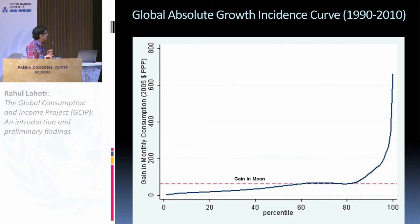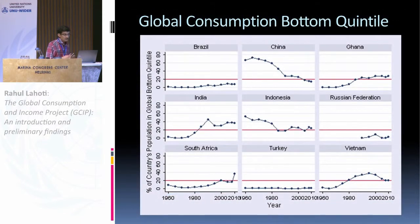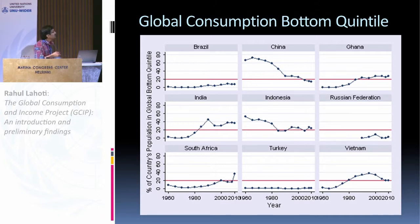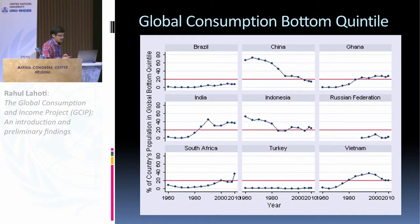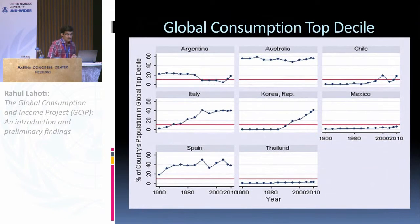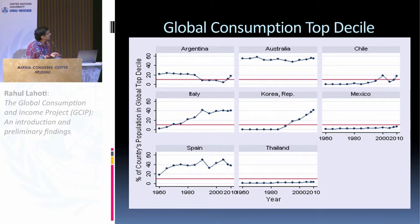Who is in the bottom quintile? In the 60s and 80s, around 60% of Chinese were in the bottom quintile, but now less than 20% are. The space left behind by China is now occupied by India and other countries — Indians, who were not in the bottom quintile before, are now around 40% in the bottom quintile. In the top decile, Korea shows a dramatic change: in the 80s it was nowhere in the top decile, but now around 40% of Koreans are in the top decile.